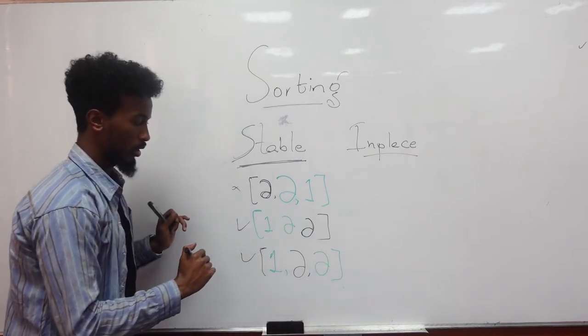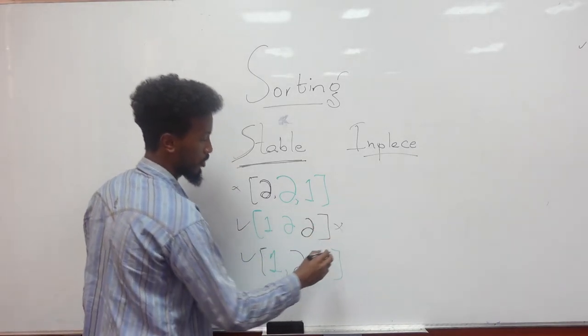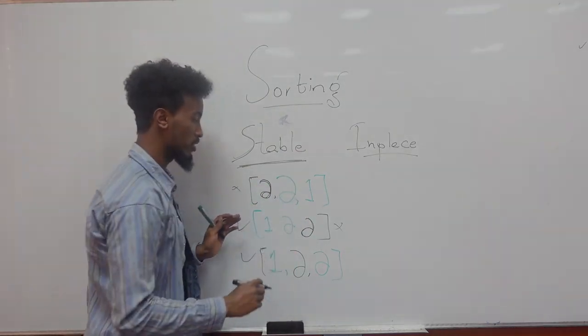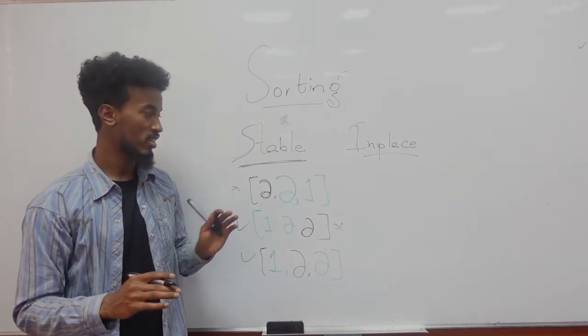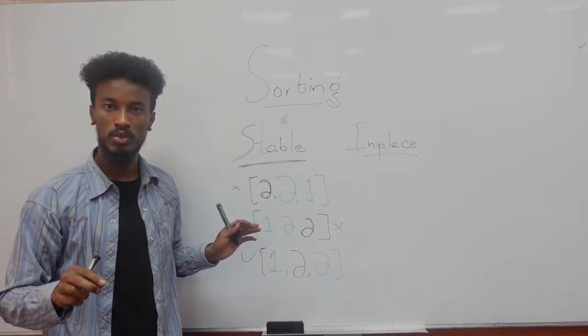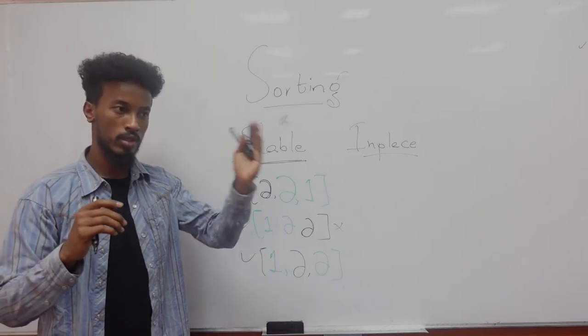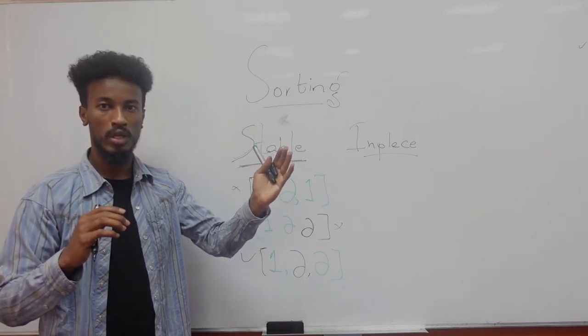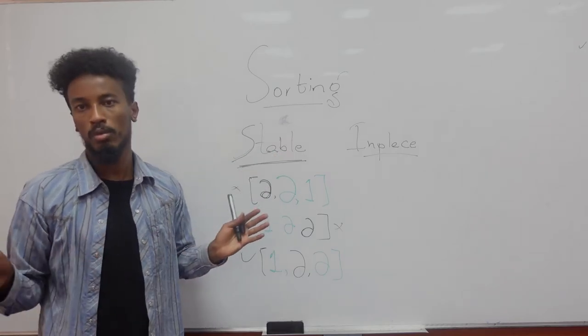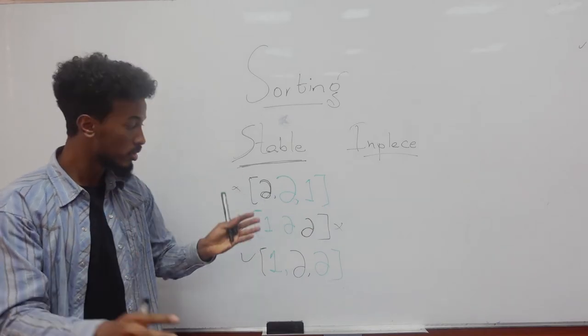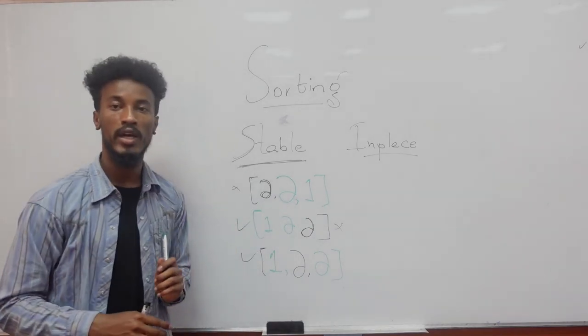So when we talk about stability, this one is not stable because it changed the order of identical items. Stability means if there is a tie between items in a given list of items, their order must be kept. So if the first one is appearing last in the sorted one, it is not stable. The first one should appear first, while only considering the order of the identical ones.